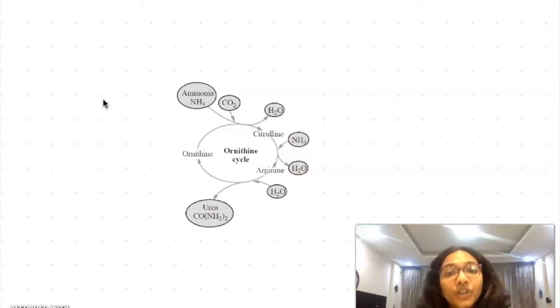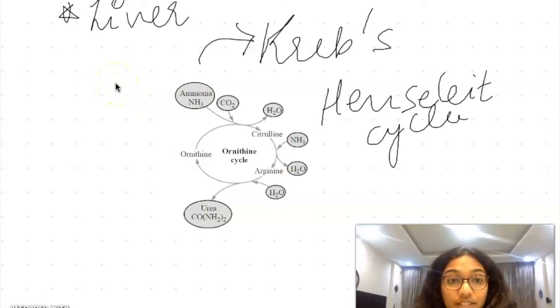Where and when is this nitrogen or ammonia converted into urea? This process takes place in the liver and is also known as ornithine cycle or Krebs-Henseleit cycle, named after the people who discovered it.